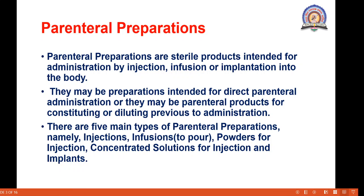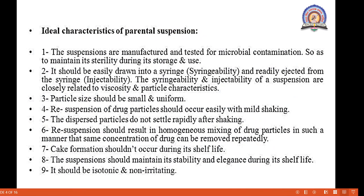There are 5 main types of parenteral preparation — 5 ways we introduce a sterile product into our body. These are: injection, infusion, powders for injection, concentrated solution for injection, and implants. By these 5 ways we inject a sterile product into the body — that is parenteral preparation.